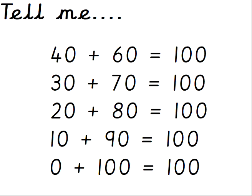Tell me — 20 add what is 100? You've got it, 20 add 80 is 100. Tell me — 0 add what is 100? You're good at this! 0 add 100 is 100. 40 add what is 100? 40 add 60 is 100. 10 add what is 100? 10 add 90 is 100. Number bonds, number bonds, they're connected. If you can make 10, they've just made 100! Well done, boys and girls!